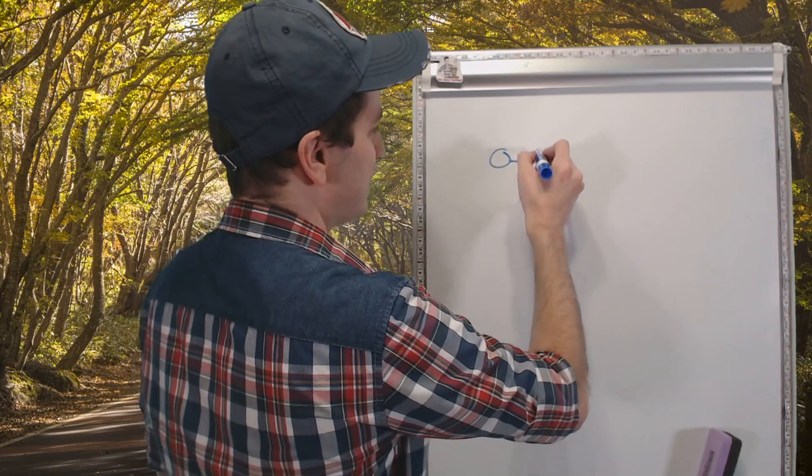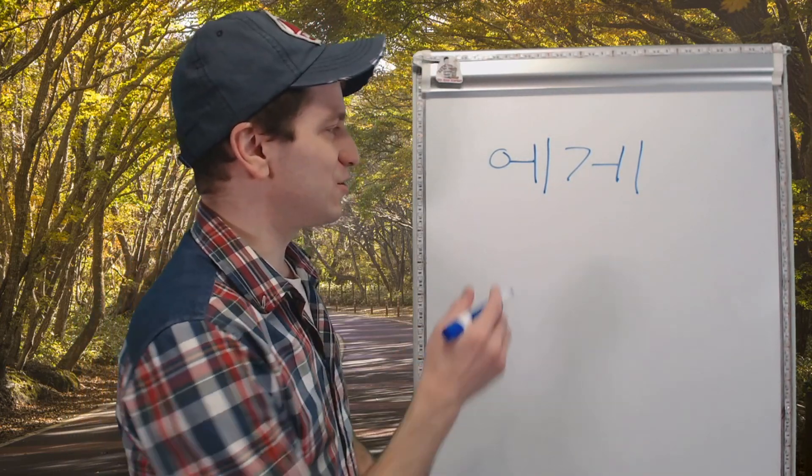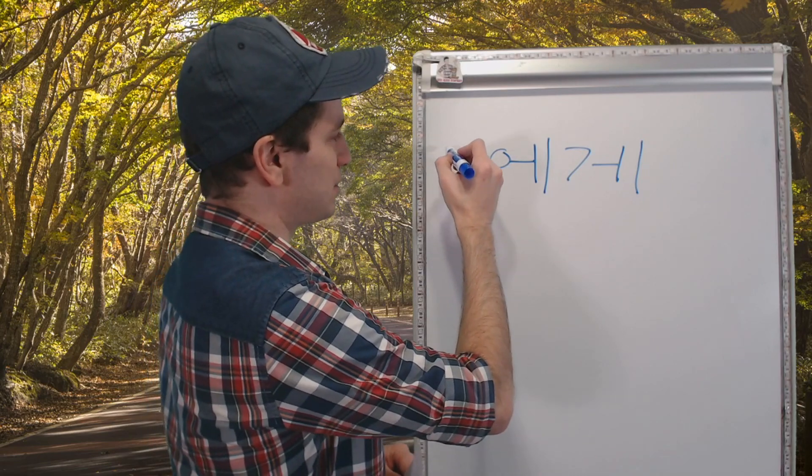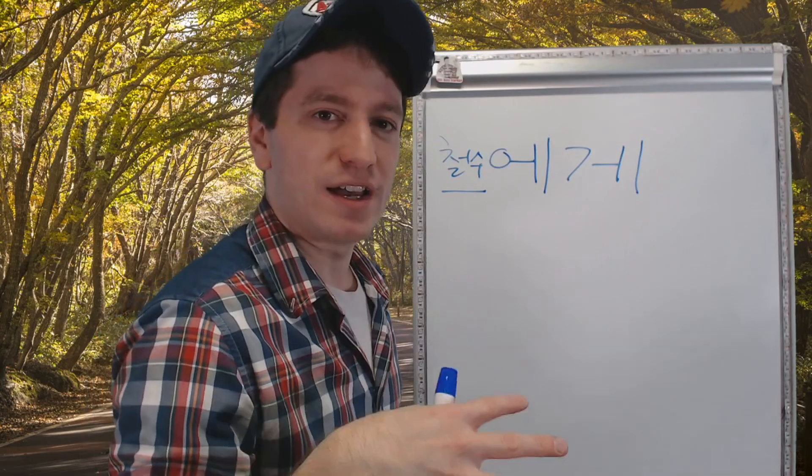The first thing we're going to be learning how to say is to a person. 에게 means to and the way you use it is you simply take a person. So we'll just put 찰수 here. Person 에게. And we have to a person.